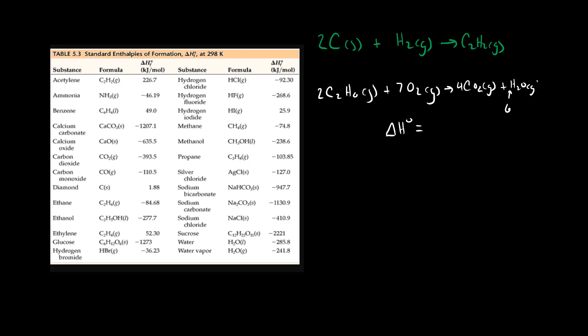So delta H for the reaction is going to be the sum of delta H of formation for products minus the delta H of formation for reactants.